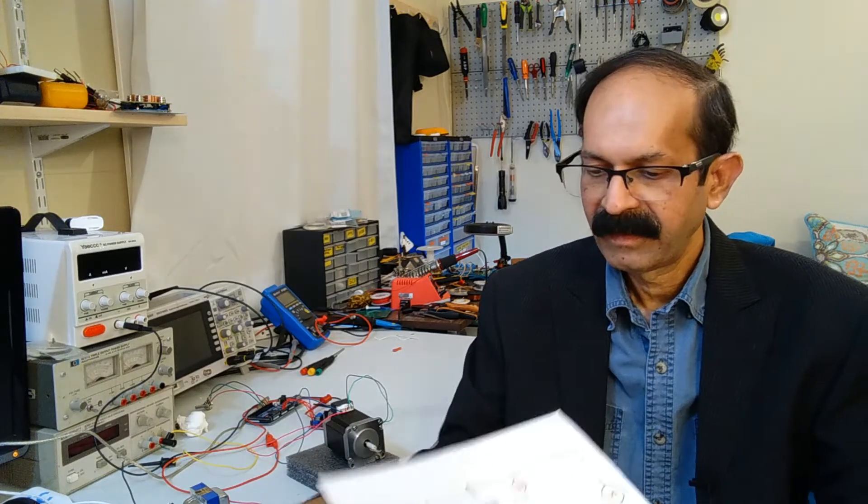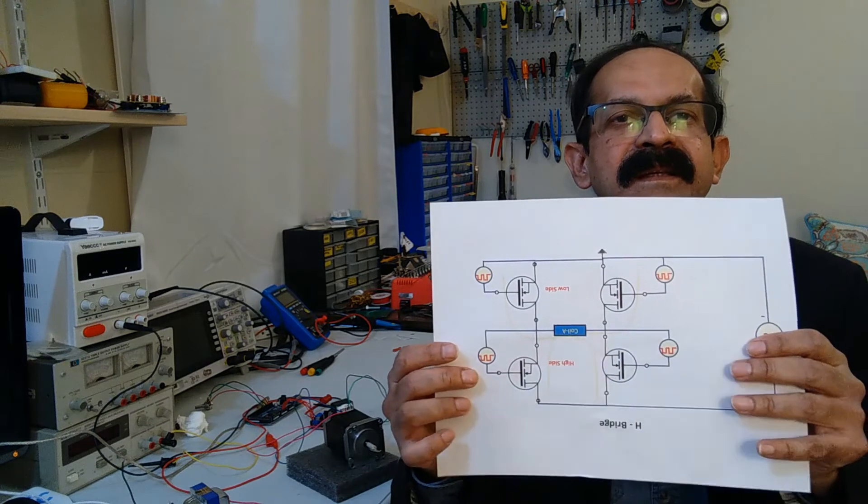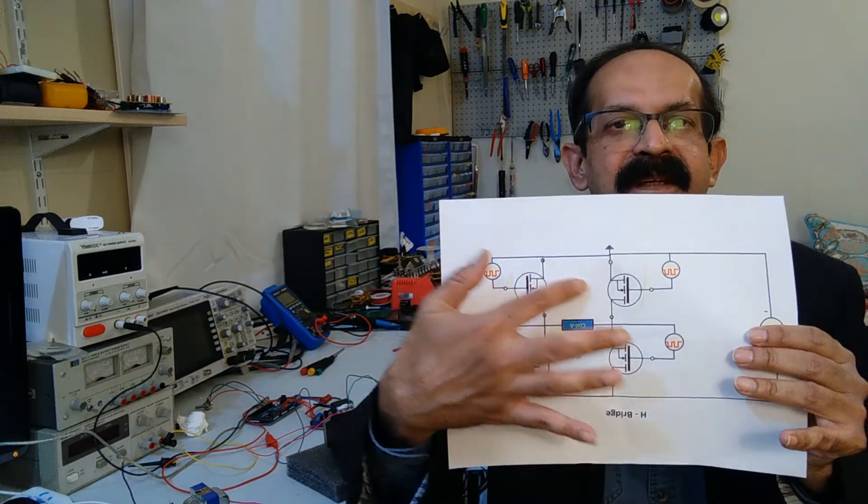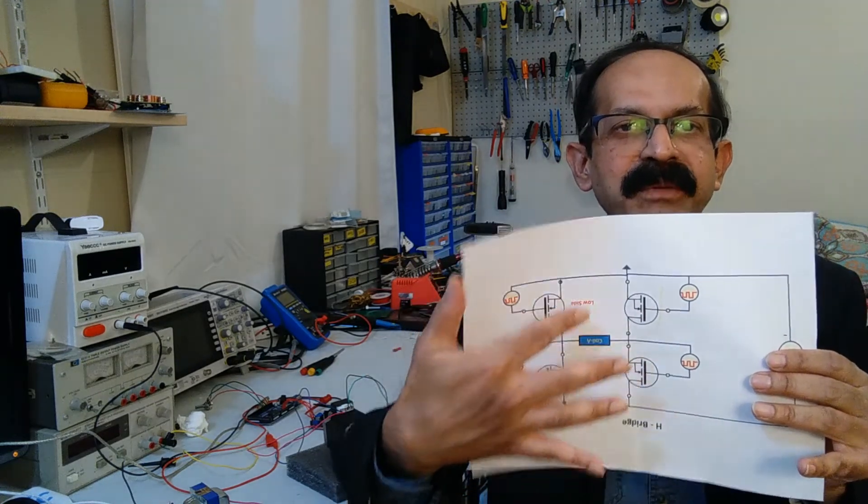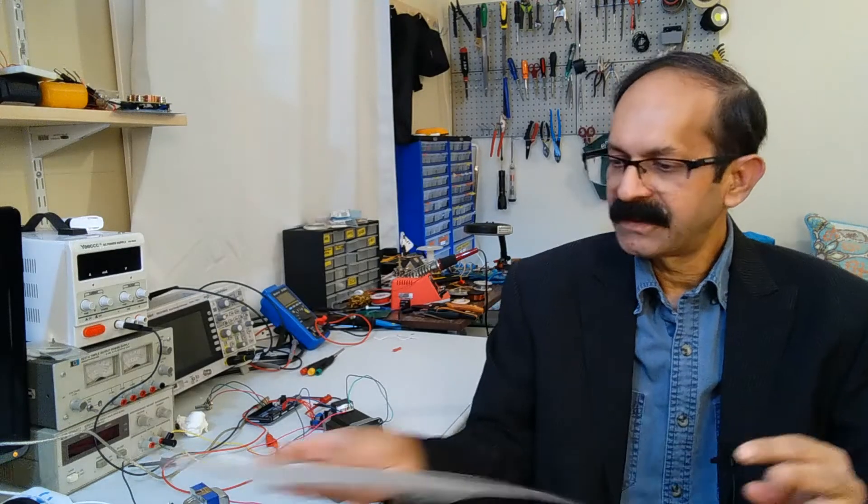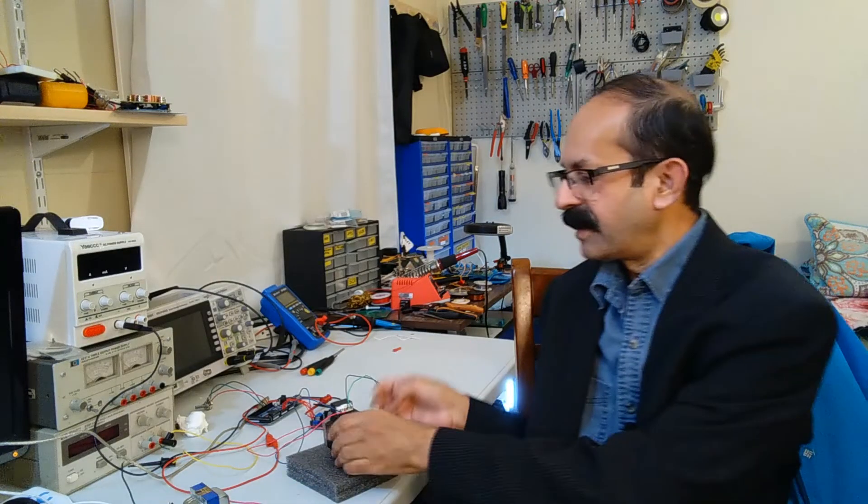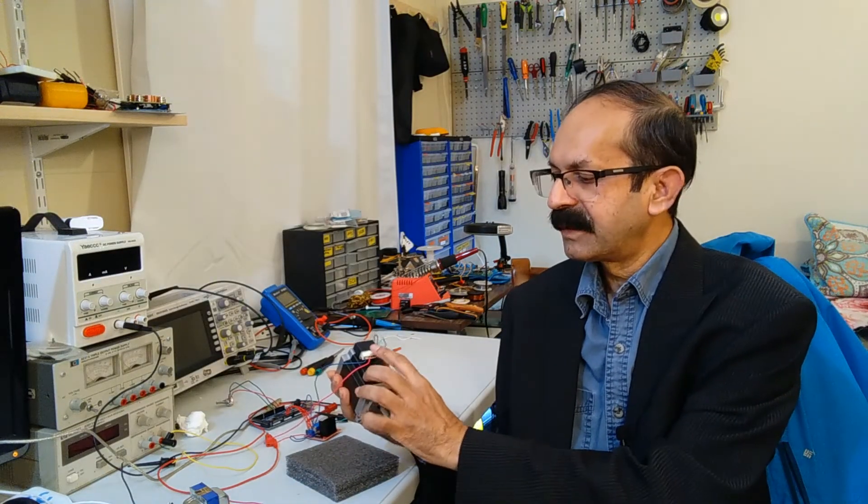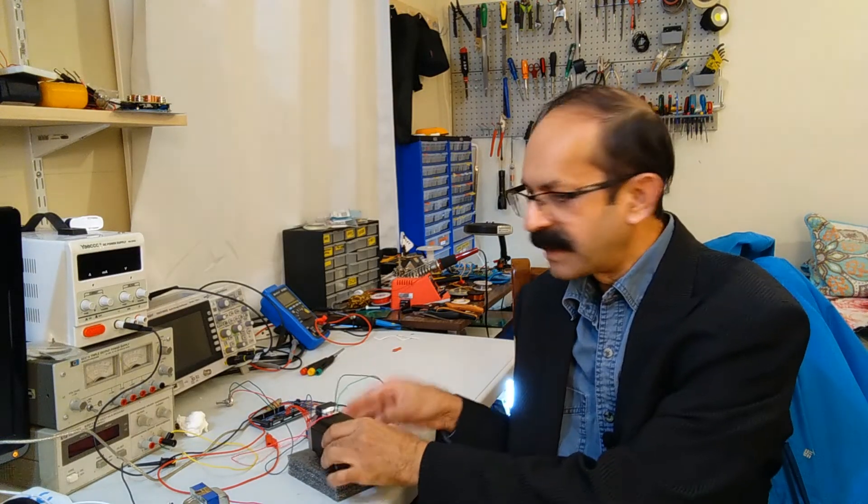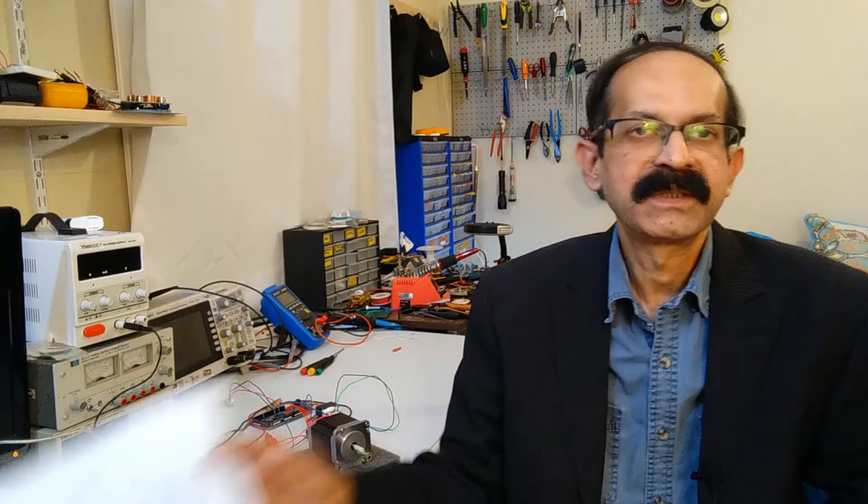And to drive a stepper motor, you need a circuit called H-bridge. There are four electronic switches and two such bridges are needed to drive a bipolar stepper motor. As you can see, a stepper motor has two coils, one we can call coil A and another one coil B. So, to drive these two coils, we need two such H-bridges.